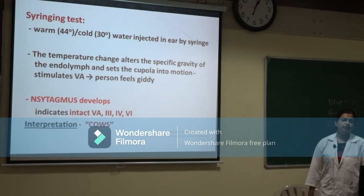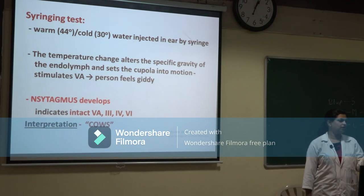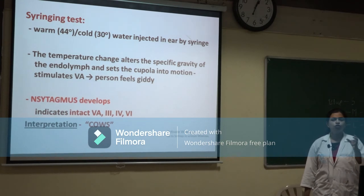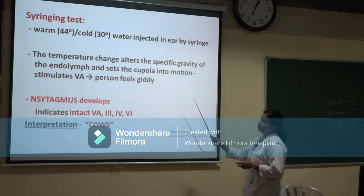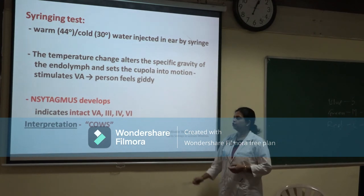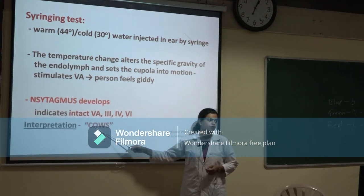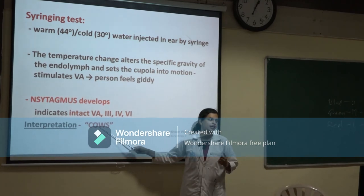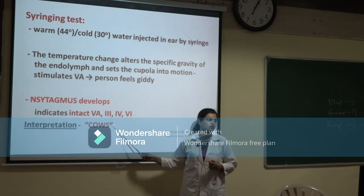The second test is caloric stimulation (syringe test). Cold water at 30°C or warm water at 42–44°C is syringed into the external auditory meatus. The temperature change alters specific gravity and stimulates the vestibular apparatus. The COWS effect is observed: Cold water causes nystagmus to the Opposite side; Warm water causes nystagmus to the Same side.